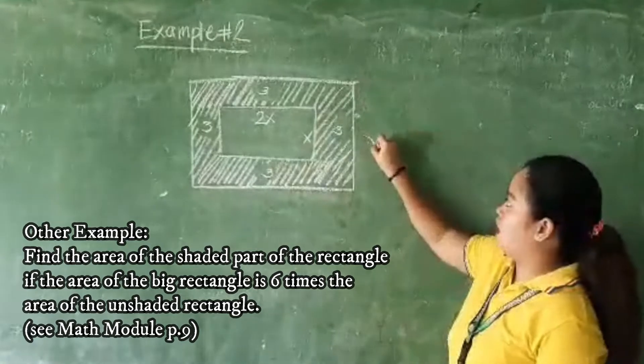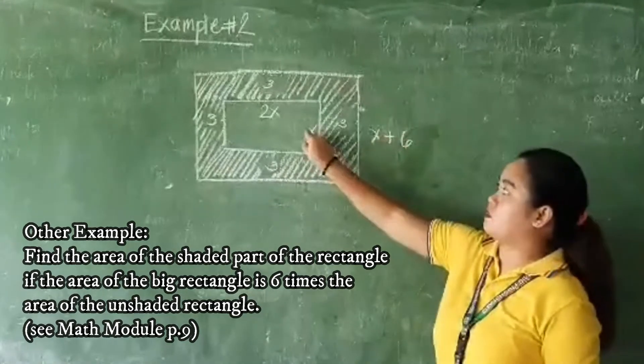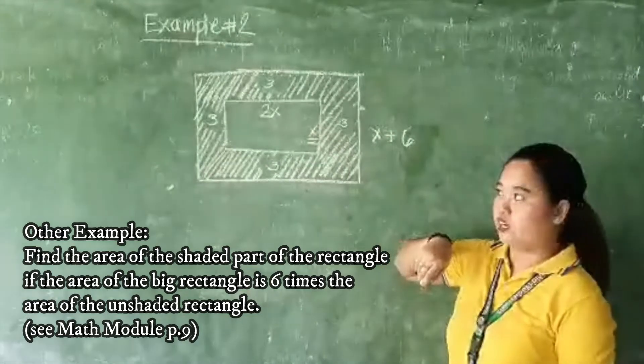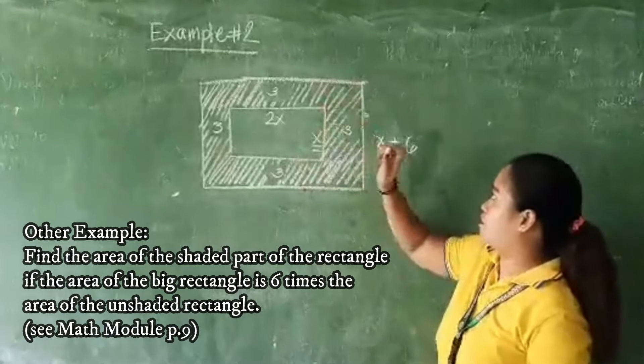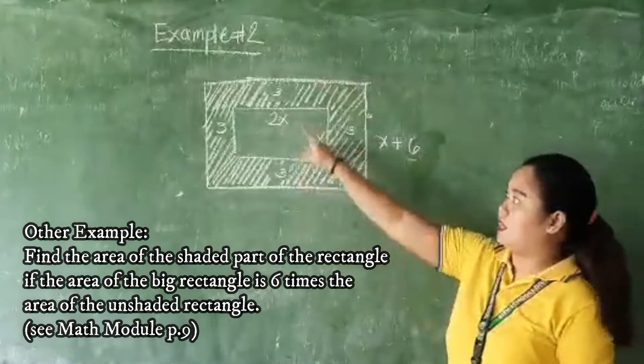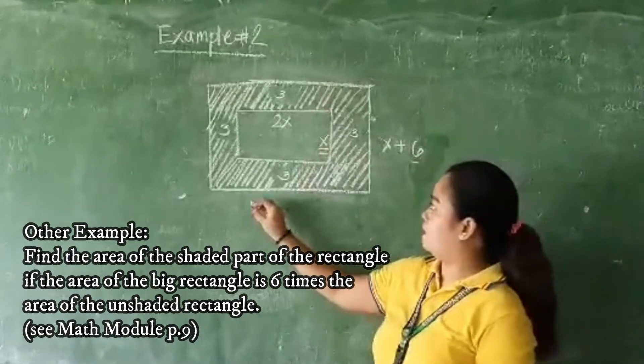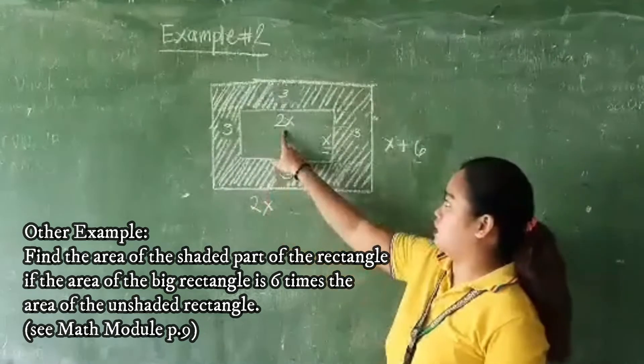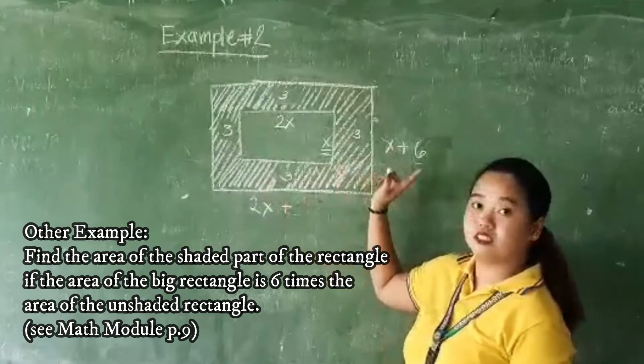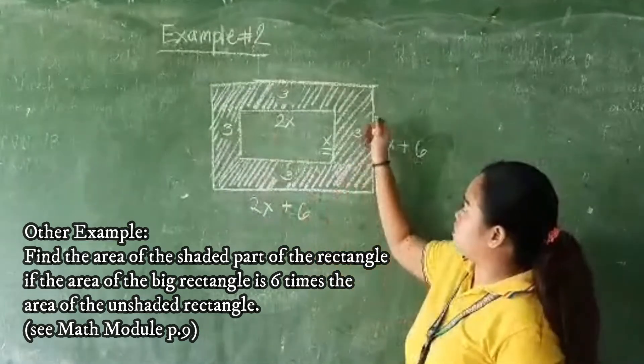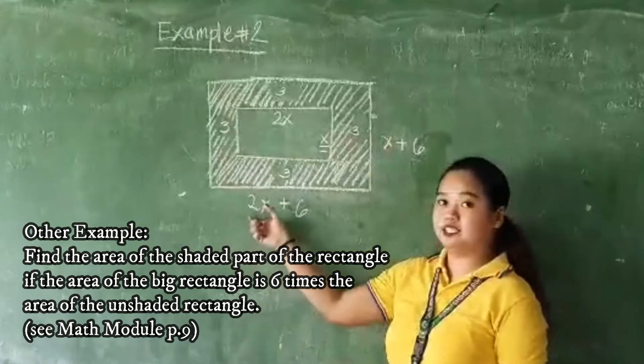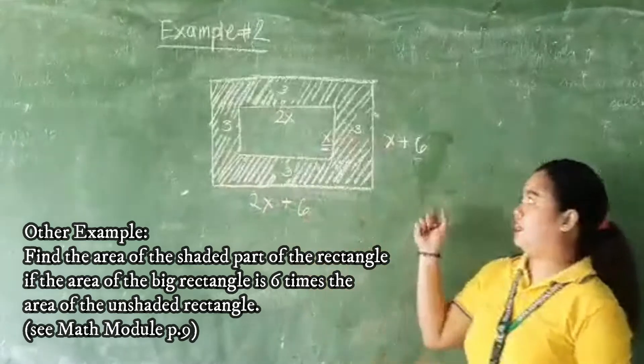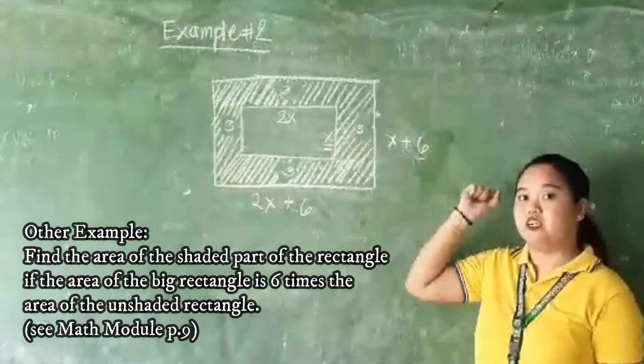So we need x plus 6—x because it is given the small rectangle plus the measurement of this shaded part which is 6, 3 plus 3. Our length is 2x here, the given, plus 6, because we have 3 here and 3 here. So this is the value of the length of the bigger rectangle and the width of the bigger rectangle.